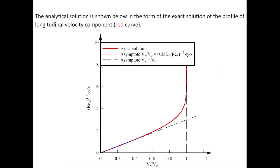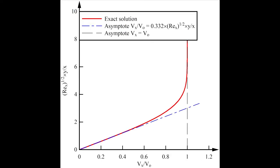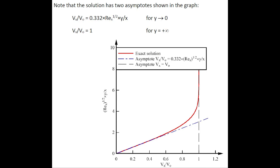The analytical solution of this equation called the Blasius equation is shown below in the form of the exact solution of the profile of the longitudinal velocity component, the red curve shown here. Note that the solution has two asymptotes illustrated on the graph.